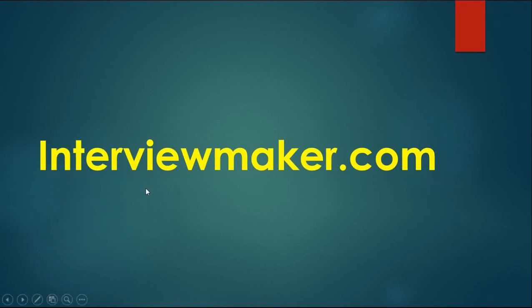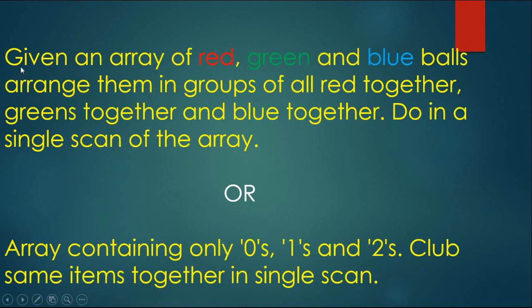InterviewMaker.com. Given an array of red, green and blue balls, arrange them in groups of all red together, greens together and blue together. Do it in a single scan of the array. So our array contains only 0s, 1s and 2s. Club same items together in a single scan.